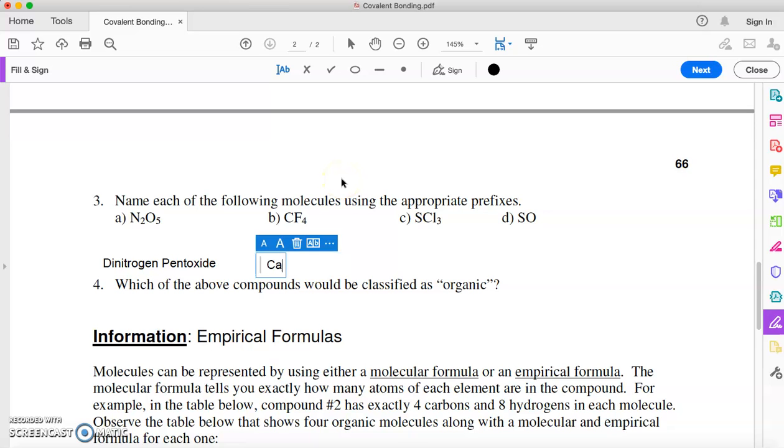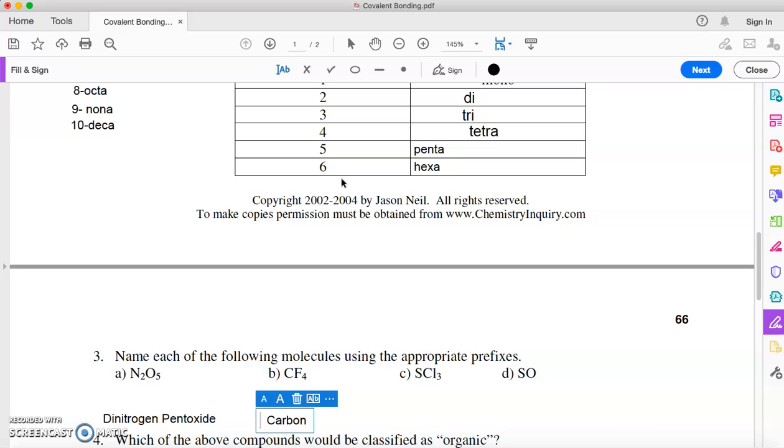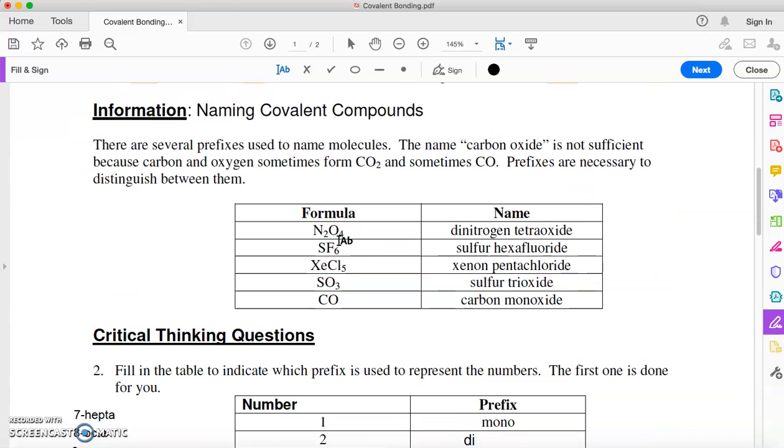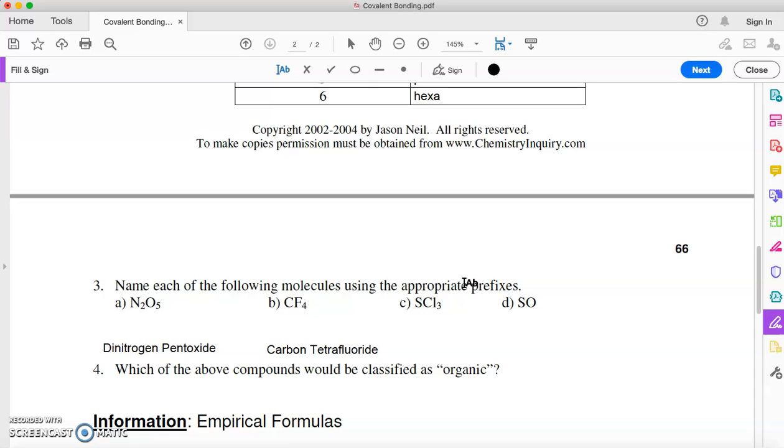Let's look here. CF4: C is carbon, and 4 is tetrafluoride. Now, some of you are probably asking, why didn't you put mono in front of carbon? And here, if you look at some of these other examples, you got S by itself. You didn't say monosulfur hexafluoride. You didn't say monoxenon pentachloride. The only word in a covalent compound or a molecular compound that doesn't have a prefix is if it's the first element, and there's only one. You don't use a prefix, so carbon wouldn't be monocarbon, just be carbon.